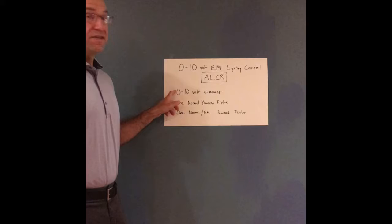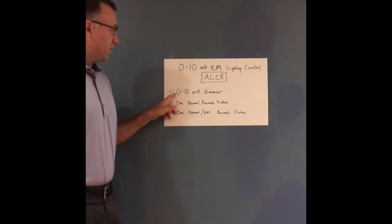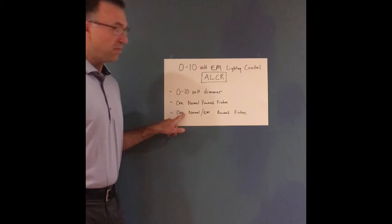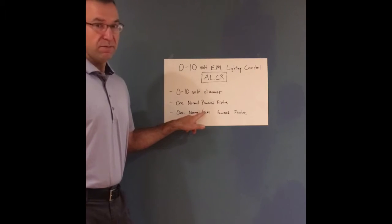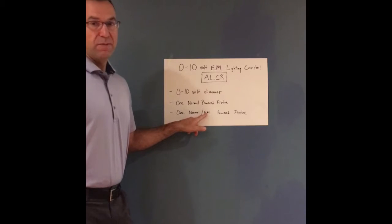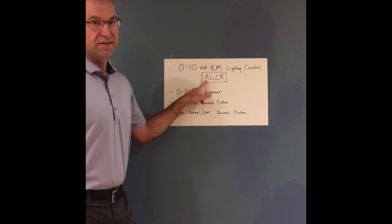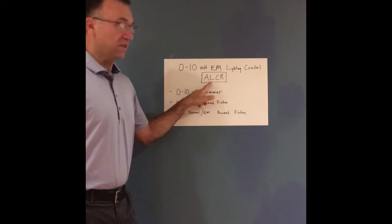So we're going to have a zero to 10 volt dimmer, we're going to have a fixture powered by normal power, and then we're going to have a second fixture powered by normal slash emergency power. We're going to get them all to work to go on and off and dim together with this device, an automatic load control relay.